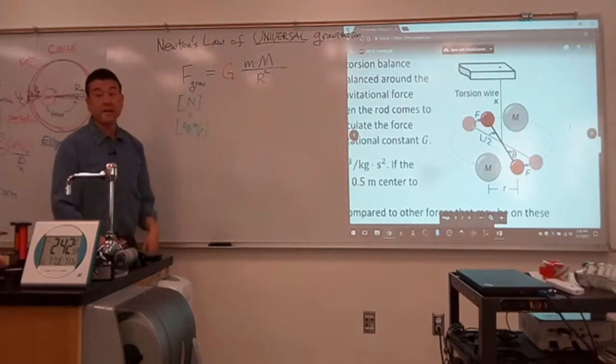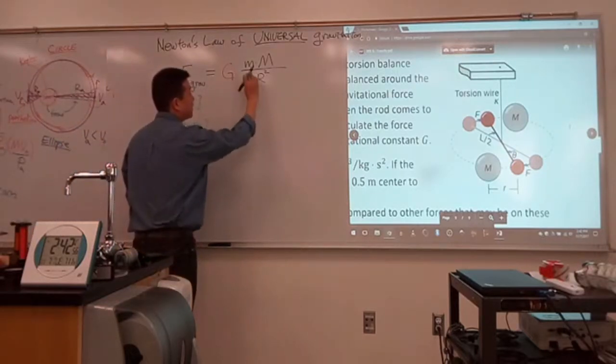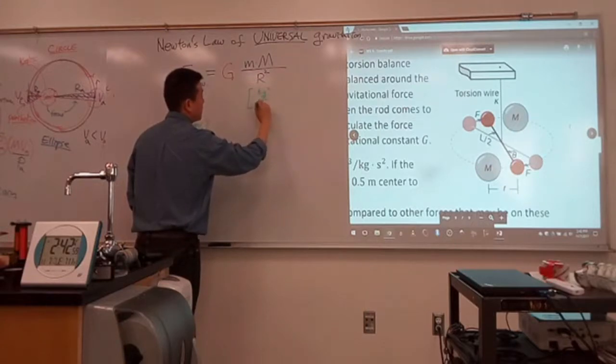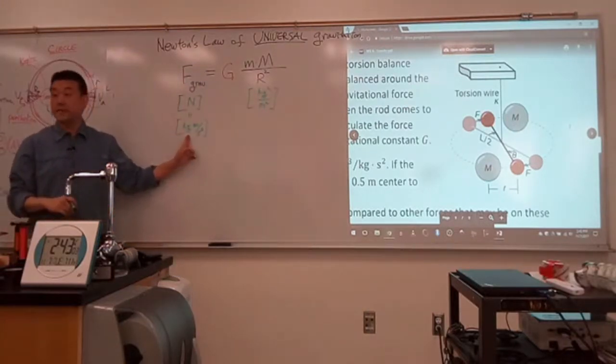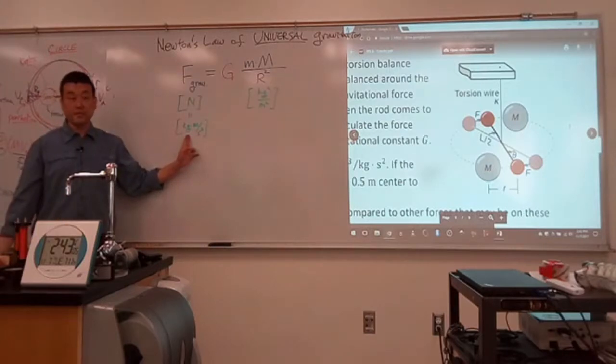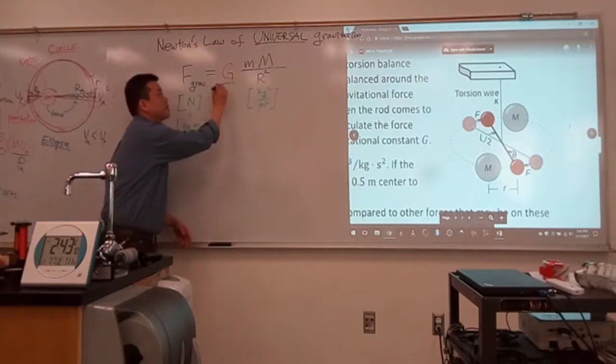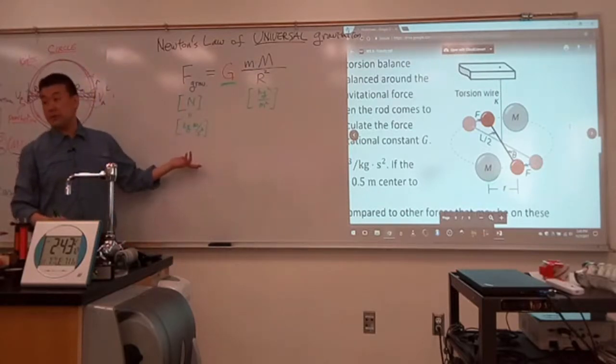On the right-hand side, these are the units you have so far. Kilogram squared divided by meter squared. All right. That cannot be equal to this. If they don't have the same units, then they cannot be equal to each other. So, at a minimum, you need a constant here to fix this problem.